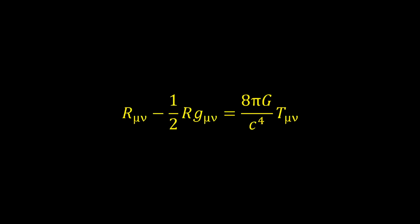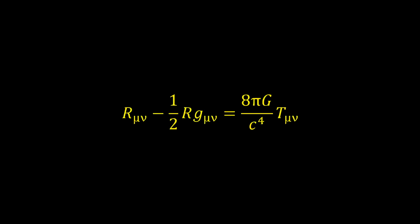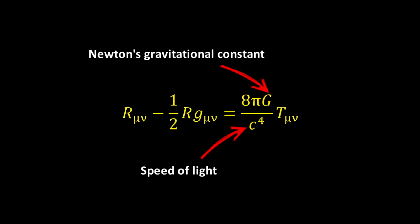The main equation looks like this. On the left-hand side, the R and G components describe the curvature of space-time. On the right-hand side, we have a bunch of constants, including Newton's gravitational constant G, and the speed of light C, which don't change, multiplied by T. This is the stress-energy tensor. This describes all the matter and energy that causes the curvature on the left-hand side.